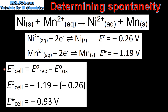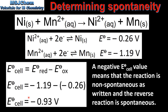When we use this equation we get a cell potential of negative 0.93 volts. The negative value for the cell potential means that this reaction is non-spontaneous as written, and the reverse reaction is spontaneous.